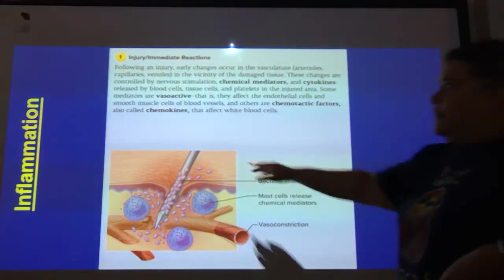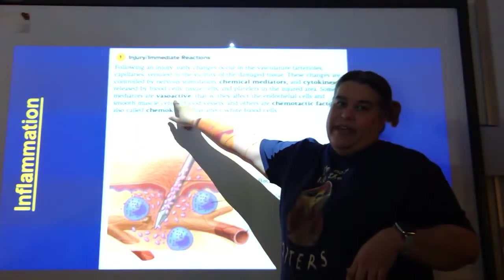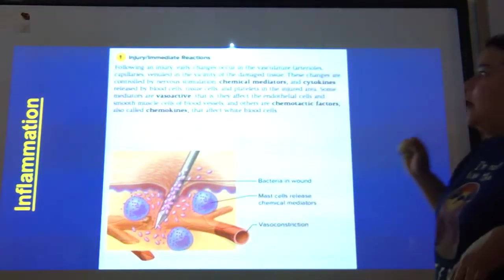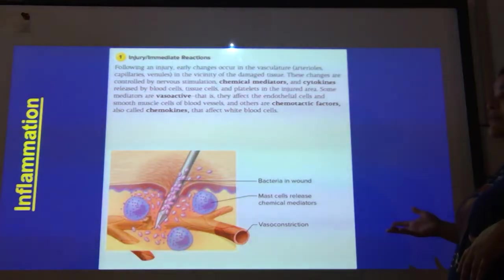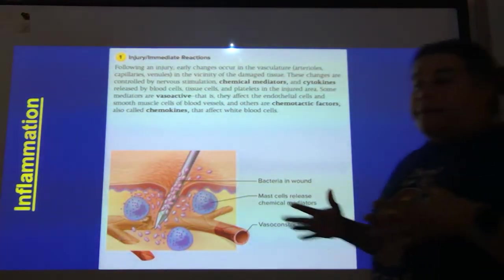Some of these chemicals are vasoactive — vaso means vessel, like a blood vessel. They affect the endothelial cells and smooth muscle cells of blood vessels. There are also chemotactic factors called chemokines that affect white blood cells, attracting them right to where damage has occurred. The smooth muscle helps me change the size of vessels; if I'm bleeding profusely, I can shrink the vessel to limit blood loss.